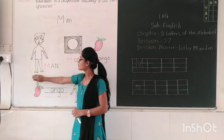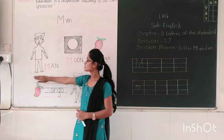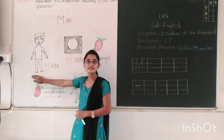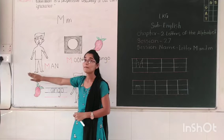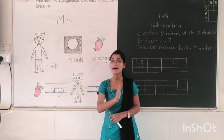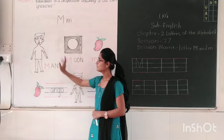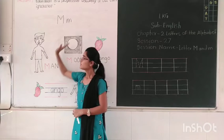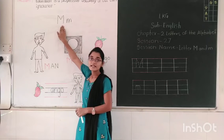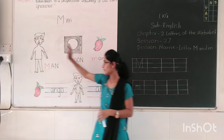Now I have drawn some pictures. Look at the first picture and tell me which picture is this. Yes, this is man. And what is the spelling of man? M-A-N, man. So M says m, and M for man.